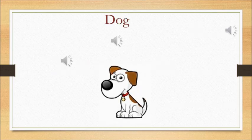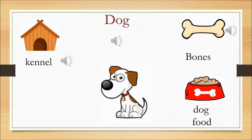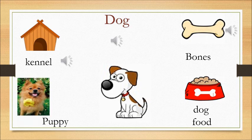So the first pet animal that we are going to do is a dog. A dog stays in a kennel. The dog house which the dog stays at home is called a kennel. It loves to eat bones and dog food. There are different dog foods nowadays in the market. And a small baby dog is called a puppy.